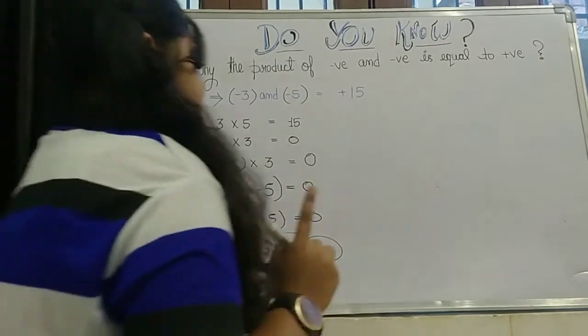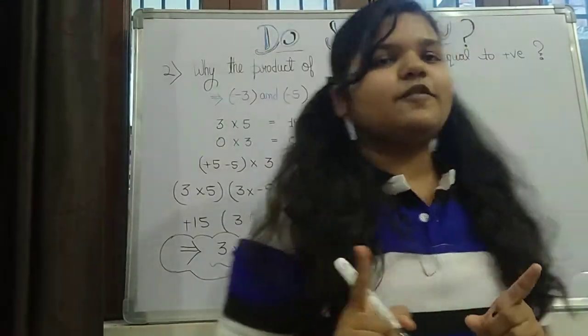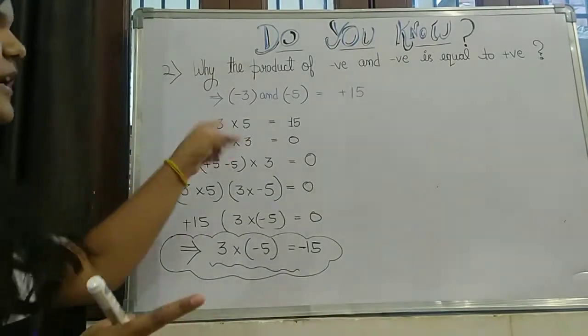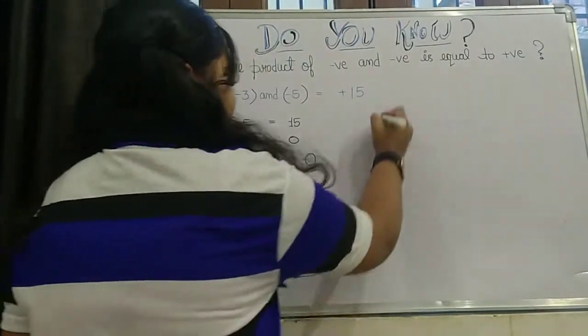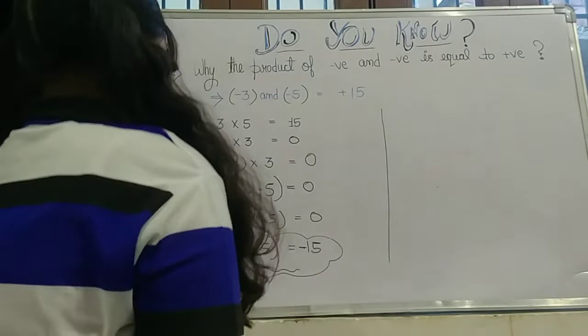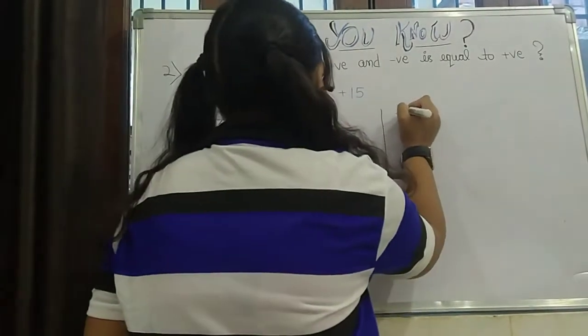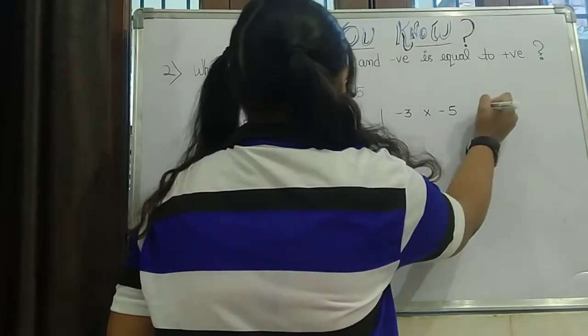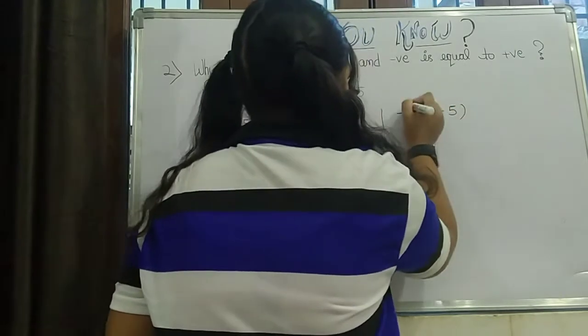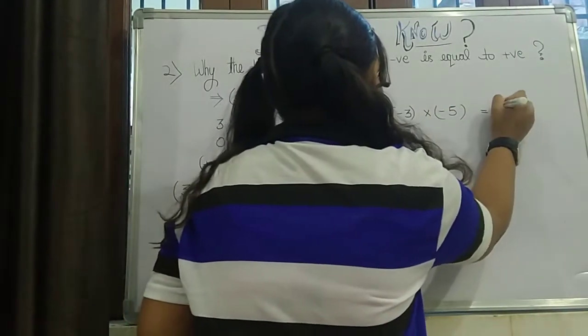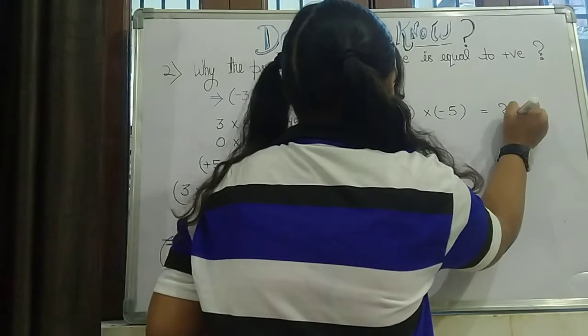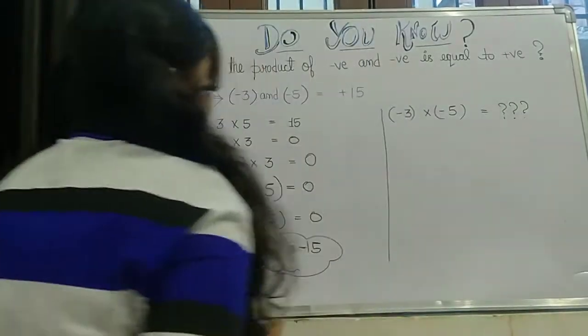So now let's see the second thing, that was actually the title of the video: that is minus 3 into minus 5. So let's see it here. So minus 3 into minus 5 is equal to... this is our question.